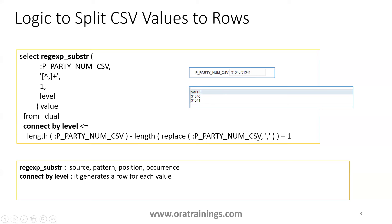It gets the length of the input and also gets the length after subtracting the comma from it, then performs a plus one. So CONNECT BY LEVEL returns two records - REGEXP_SUBSTR is executed twice, once for the first level and once for the second level, giving us two records.